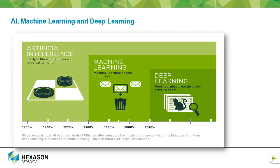Deep learning is also a type of machine learning. It differs from machine learning in the way algorithms are trained and perform classification. Let's take a look.